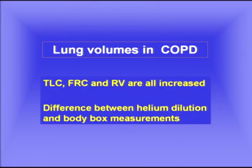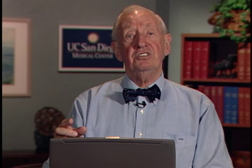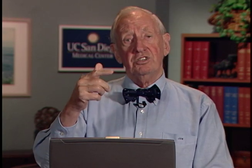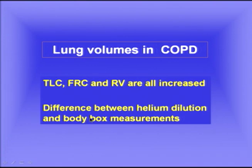Lung volumes in COPD are typically all increased: total lung capacity, functional residual capacity, and residual volume are all greatly increased. When measuring lung volumes using both helium dilution and the body plethysmograph, we see a difference between the two measurements. The helium dilution technique only measures the volume of the lung connected to the mouth, whereas there may be obstructed airways or regions with very slow helium mixing due to uneven ventilation. The body box measures total gas volume in the lung, while helium dilution gives a smaller number because not all sections of the lung are communicating with the mouth.